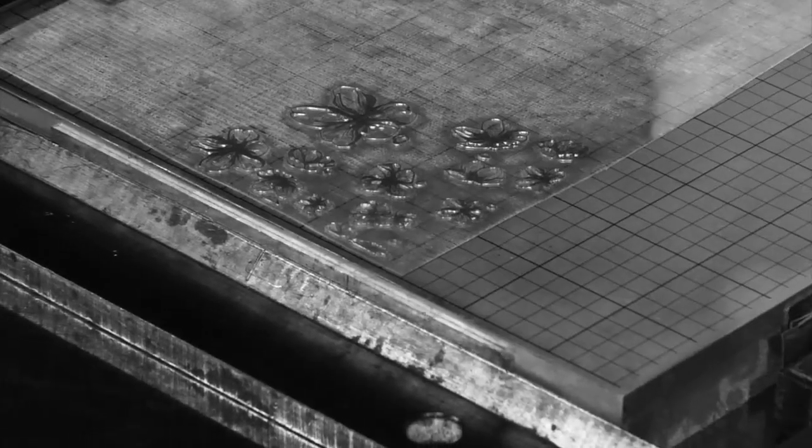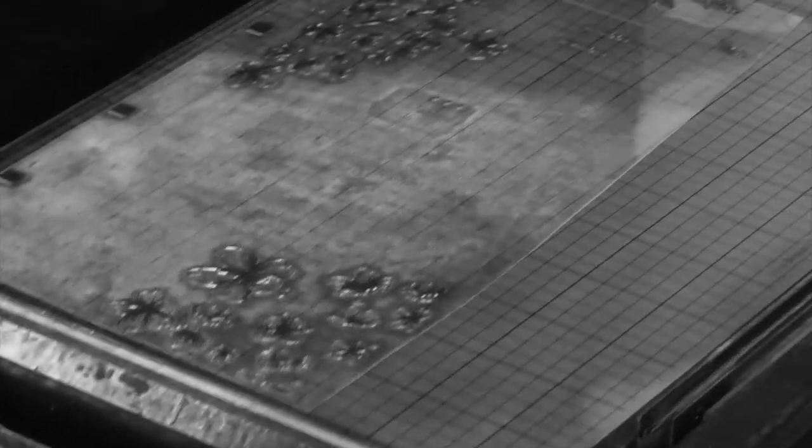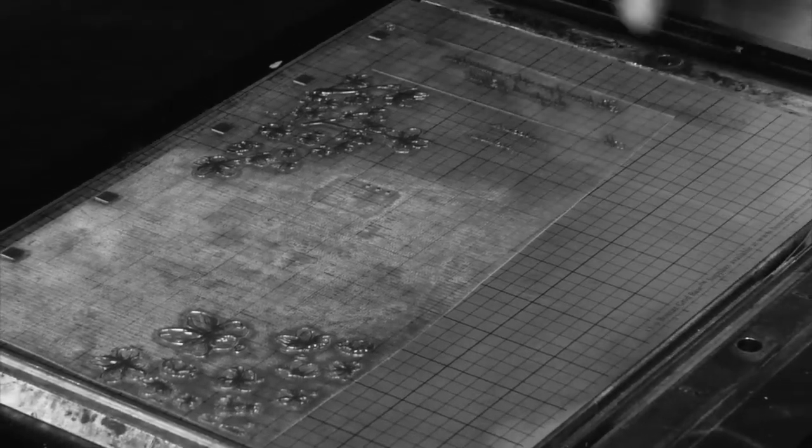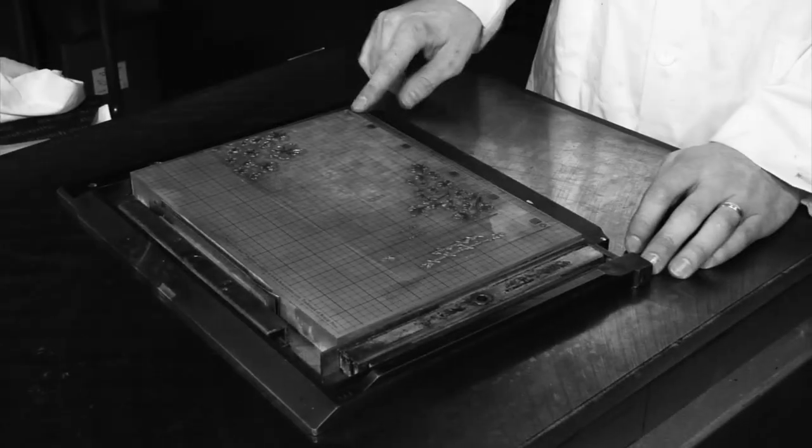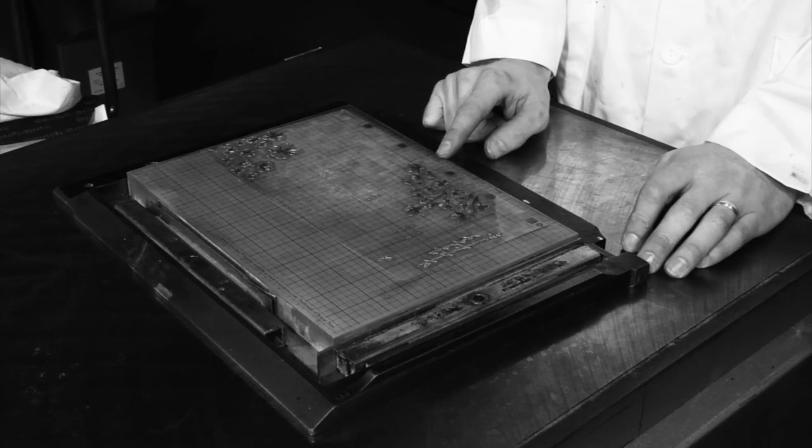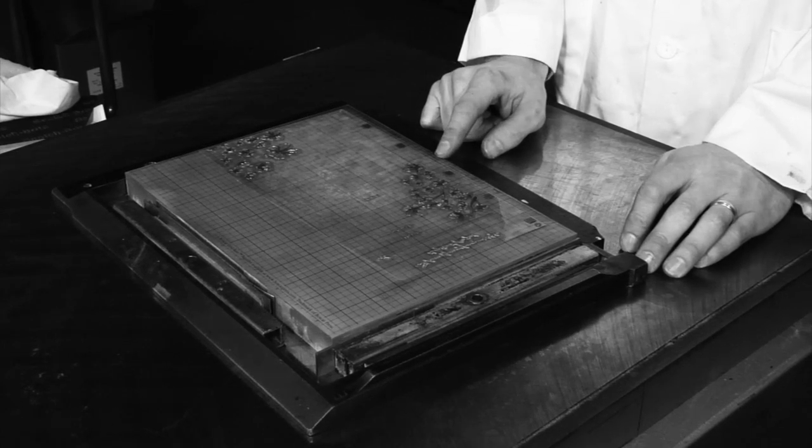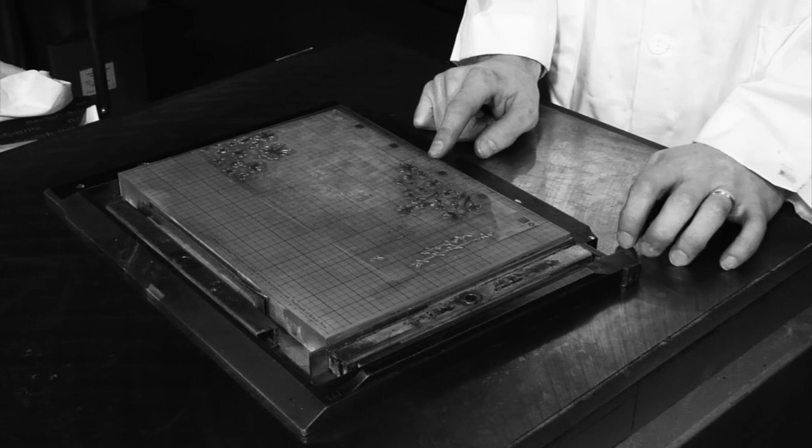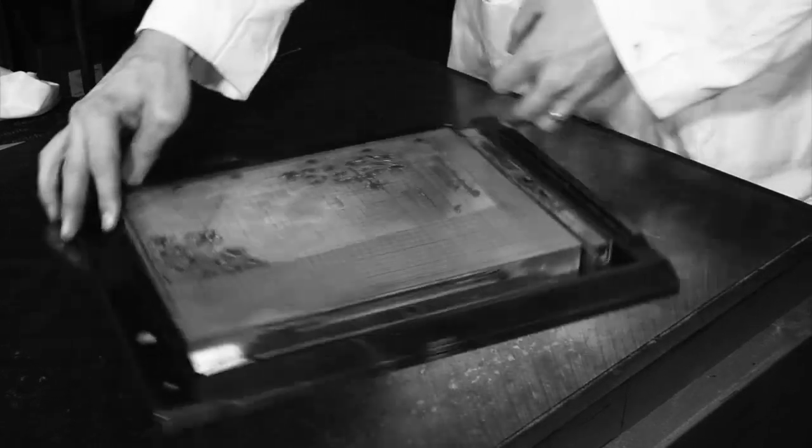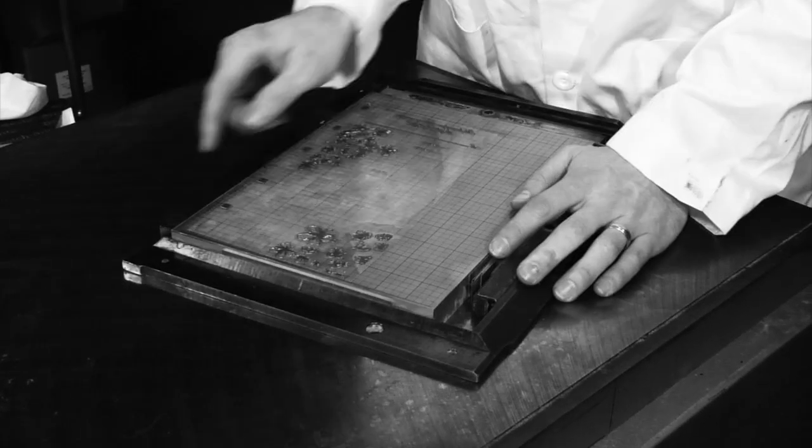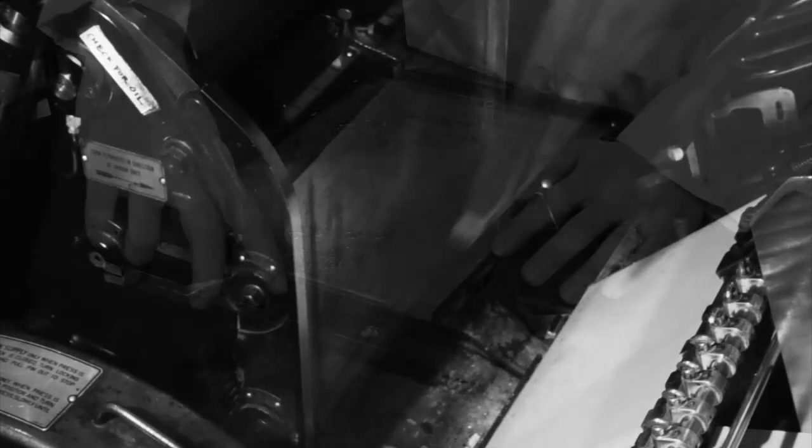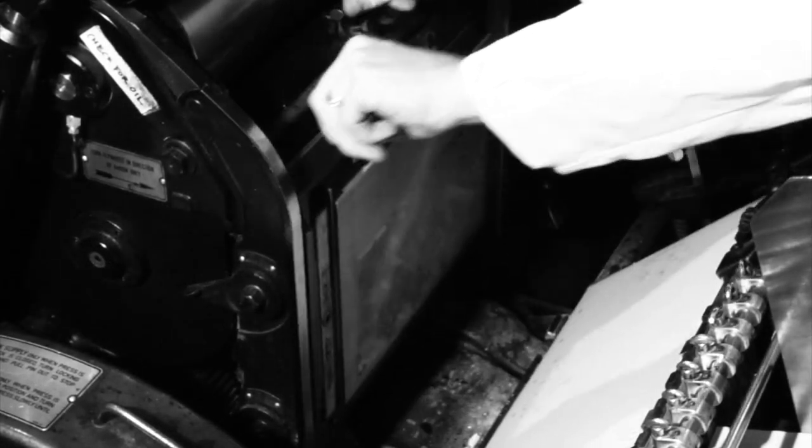The 9x12 standard base fits well within the Heidelberg chase. The press has the most pressure in the bottom center of the chase, so if possible, position your artwork so that the heavier, more solid areas are centered, and areas of lighter impression are toward the edges of the chase.